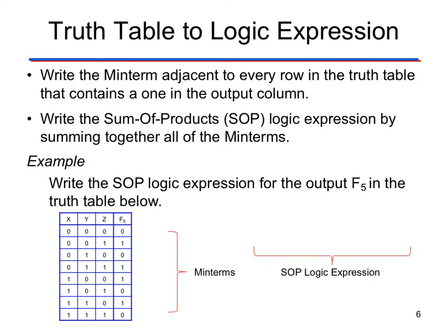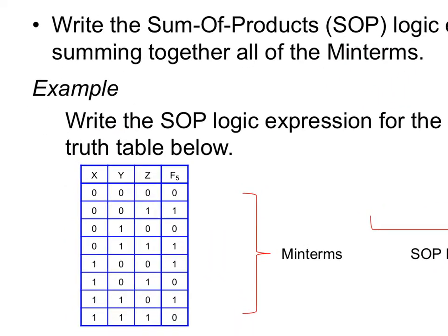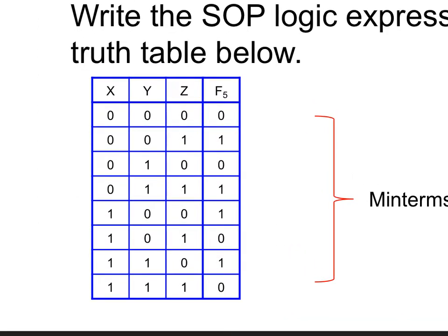Now it's time for the big show. This is where you're going to learn how to write a logic expression based off a truth table. The first thing we have to do is learn how to write a min term. Since we're doing a sum of products, we're only going to worry about where we see a one occurring on our truth table. We're going to look at this example and focus our attention anywhere we see a one on the output part of the truth table. Where I see that one occurring, I'm going to write an expression next to it called the min term.